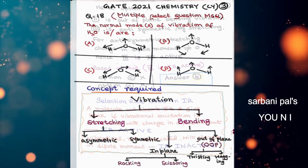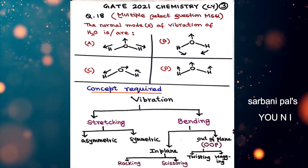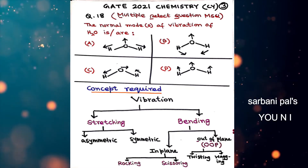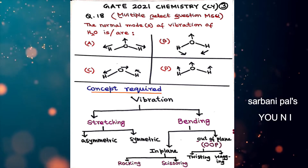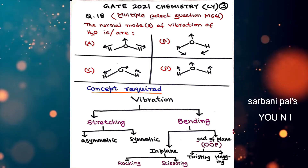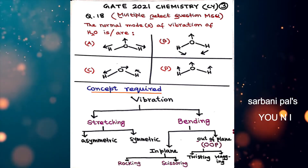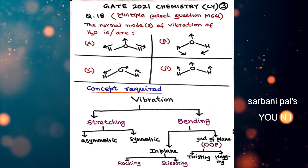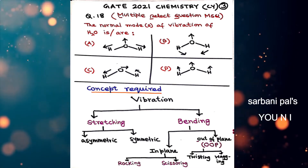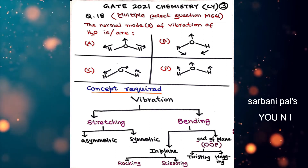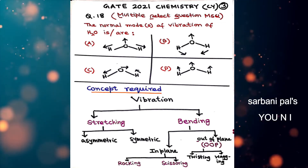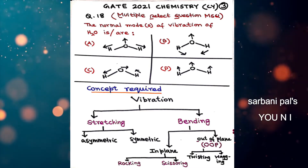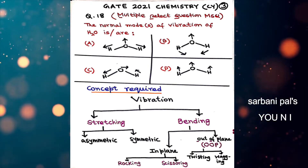Now let us move to the next question which appeared in the GATE chemistry exam in the year 2021, question number 18. This question came under the subheading of multiple select question (MSQ), so the answer may be more than one.